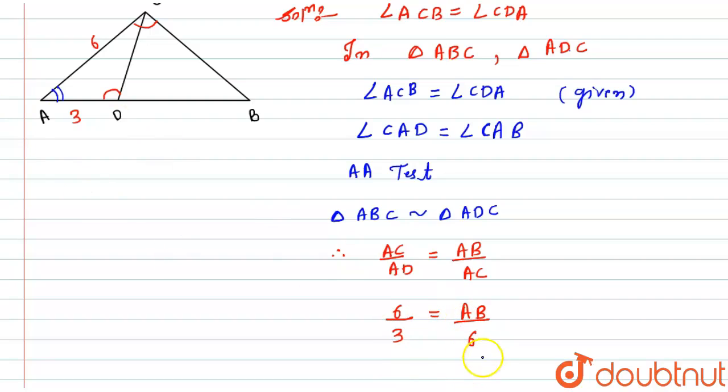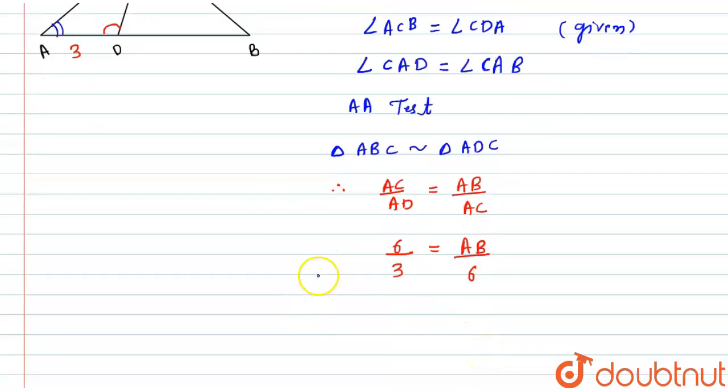Now I will take all the terms to that side so AB will become equals to 6 into 6 divided by 3. So 3 goes into 6 twice, and 6 times 2 is 12. So here we get the length of AB is 12 centimeters. I hope you will like the solution, thank you.